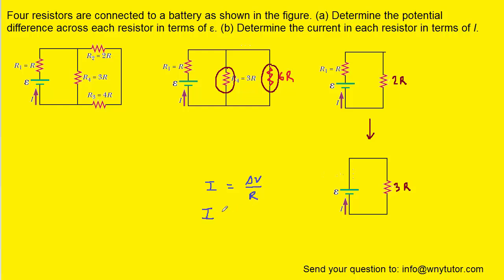Now that we have this simplified circuit, we calculate the total current flowing through it using Ohm's law. We plug in the potential difference supplied by the battery — the EMF, epsilon — and divide by the total resistance of the simplified circuit, which is 3R. That gives us the total current. Now we work our way backwards to the original circuit.